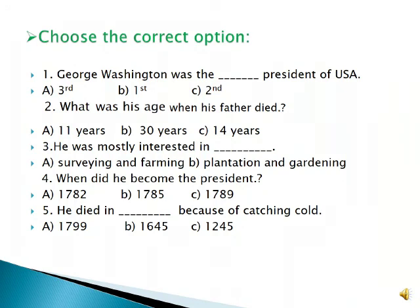Choose the correct option. Number 1: George Washington was the blank President of USA. Option A: 3rd. Option B: 1st. Option C: 2nd. The correct option is B — 1st.